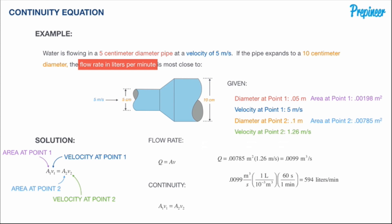There's actually a faster approach to this problem. Since Q1 equals Q2, we already had all the data needed at point one — area A1 and velocity V1 — right in the first sentence of the problem. We could have computed Q directly as Q equals A1V1 to get cubic meters per second, then converted to liters per minute immediately.